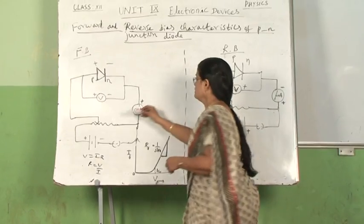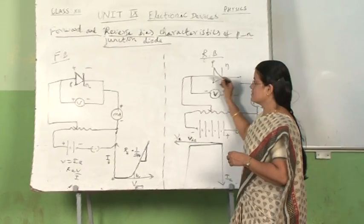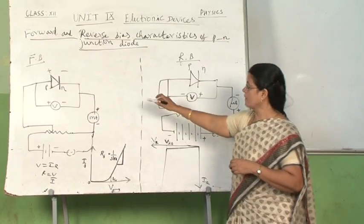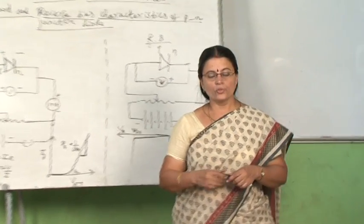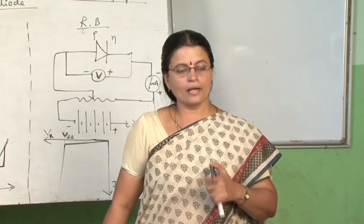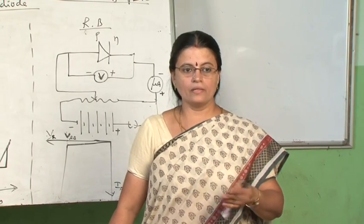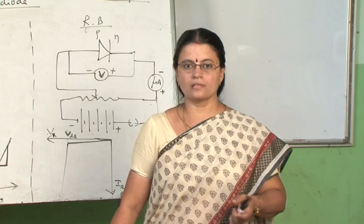So, so far we have seen the function of P-N junction diode in case of forward biasing and reverse biasing. In the next class, we will be studying the use of semiconductor junction diode as a rectifier and we will study further about this in the next classes.